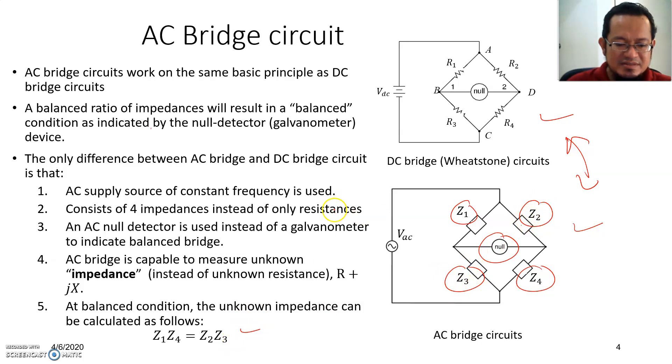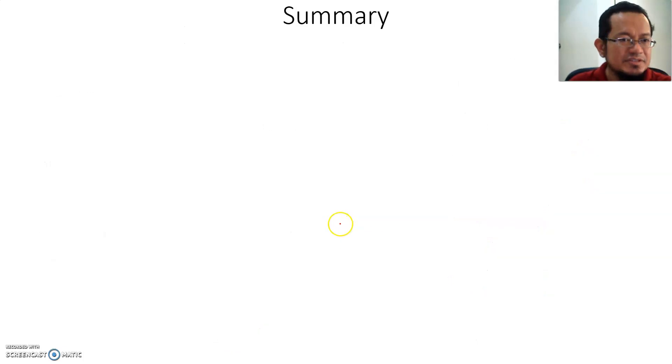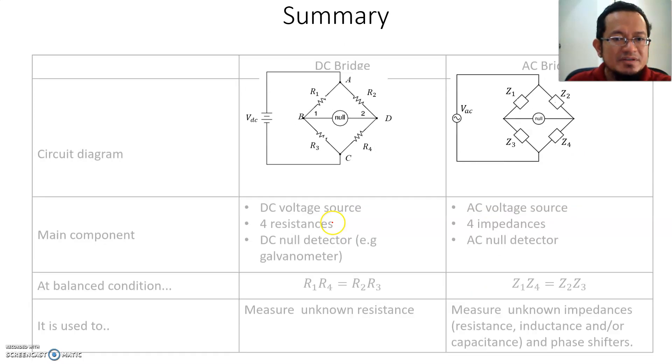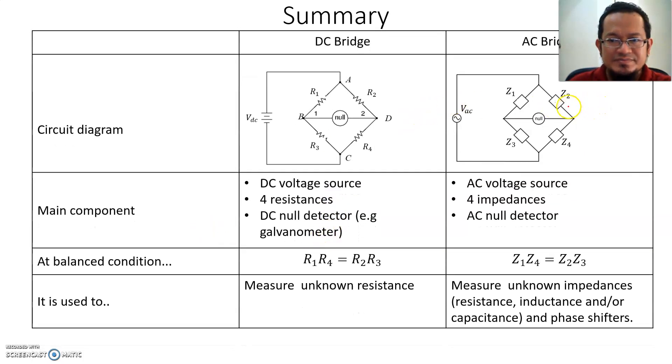In summary, these are the differences between DC bridge and AC bridge. The main component, this is all the difference in terms of main component. The formula, remember for the balance condition: for finding resistance, but now for AC bridge you have impedances. For example, DC bridge is used to only measure resistance, but for AC bridge it can measure inductance, resistance, capacitance, and it can also be used for phase shifting.